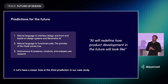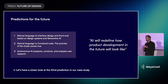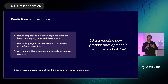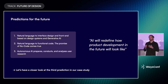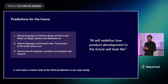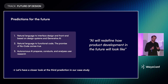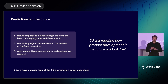The second prediction is that we will see natural language to functional code — going even beyond layout work. I think that could actually deliver on the promise of no-code, where we democratize access to software development. That will be a bit further in the future; I think we will see prediction one first, but it will happen as well.